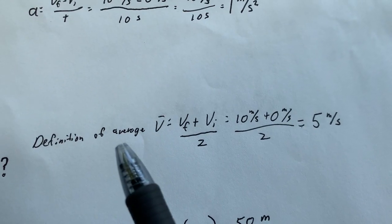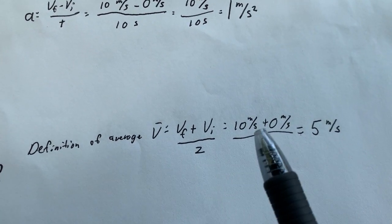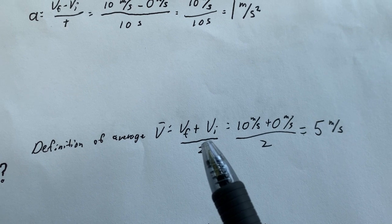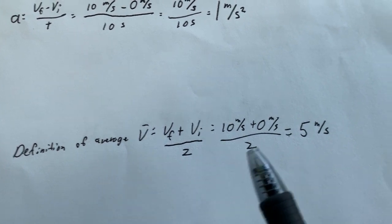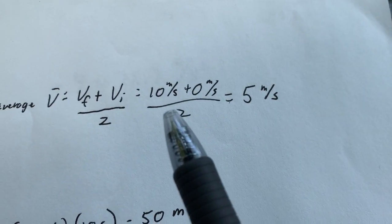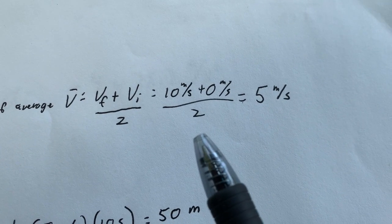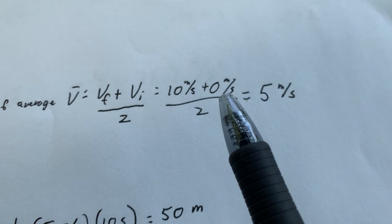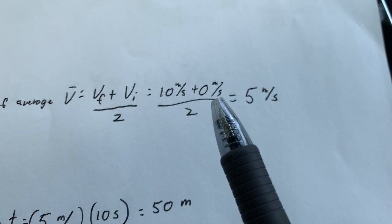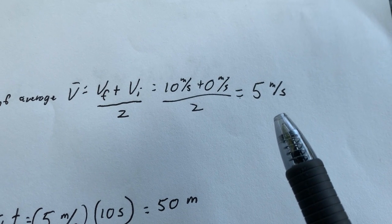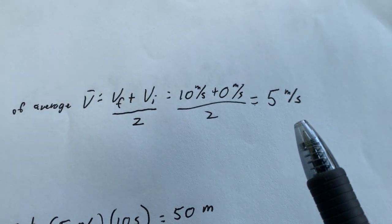Well, remember, the definition for average of two numbers is the sum of the two numbers divided by 2. Well, you have the two velocities. 10 plus 0 is going to be 10 divided by 2, since there's two numbers. Definition of average of two numbers is going to get you 5, 5 meters per second.